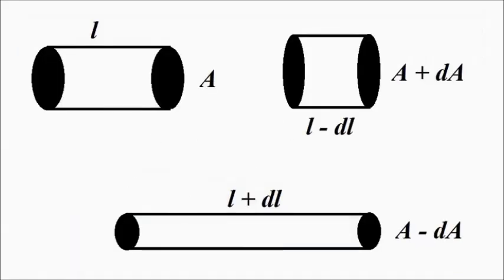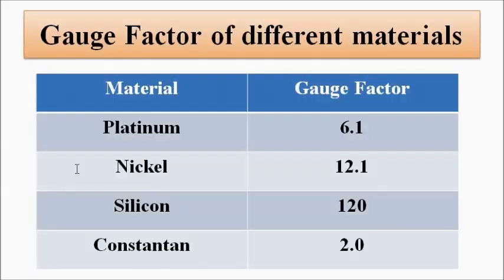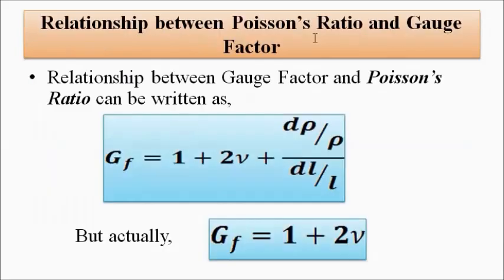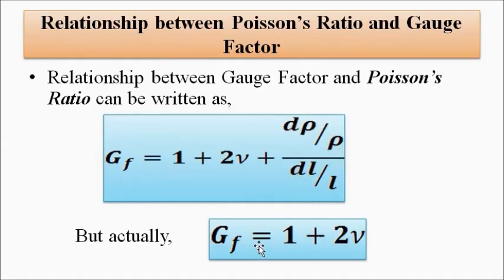The gauge factor for different materials is given, and the relationship between Poisson's ratio and gauge factor is: Gauge Factor = 1 + 2ν + (Δρ/ρ)/(ΔL/L), where Δρ/ρ is the change in resistivity divided by the original resistivity and ΔL/L is the change in length divided by original length. However, the resistivity change factor is almost negligible, so it simplifies to Gauge Factor = 1 + 2ν, where ν is Poisson's ratio.